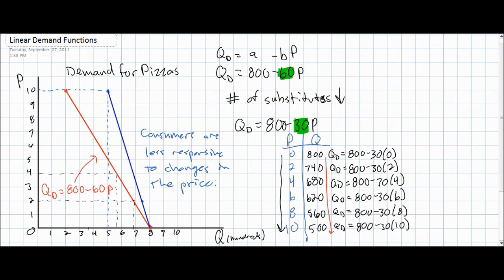A change in the b variable in a demand equation changes the slope of the demand curve and indicates that consumers are more or less responsive to price changes. Of course, if the b variable had increased from negative 60 to negative 90, that would indicate consumers are more responsive — the quantity would fall by 90 pizzas for every $1 increase in price. In this three-part series, we covered how to derive a demand curve, how a change in a non-price determinant shifts the demand curve by changing the a variable, and how a change in consumer responsiveness to price alters the b variable and the slope of the demand curve.